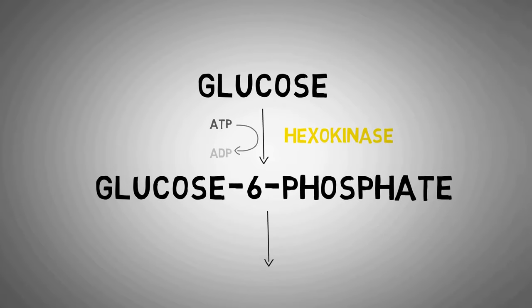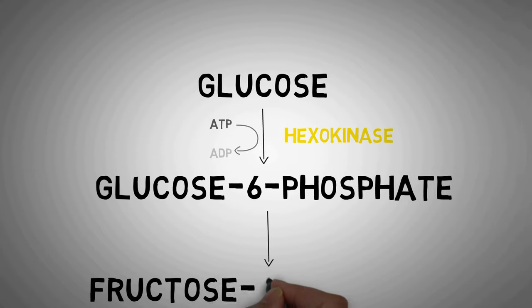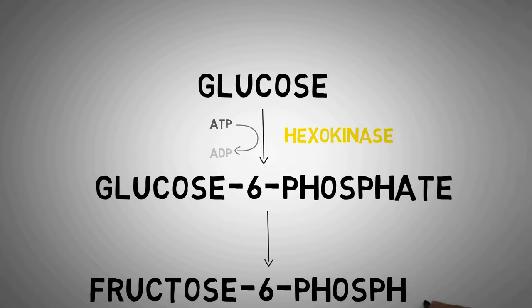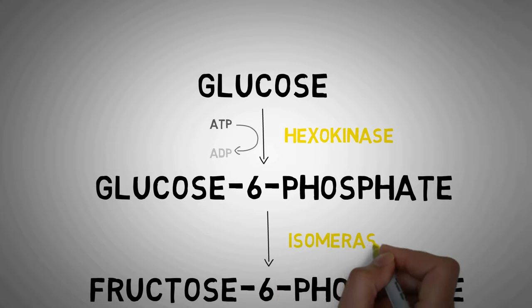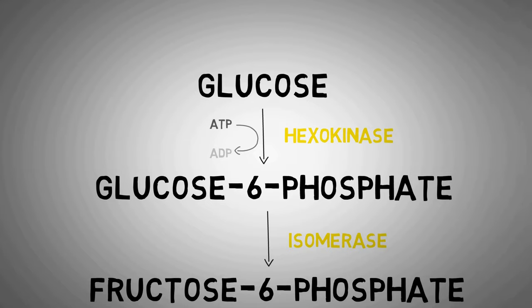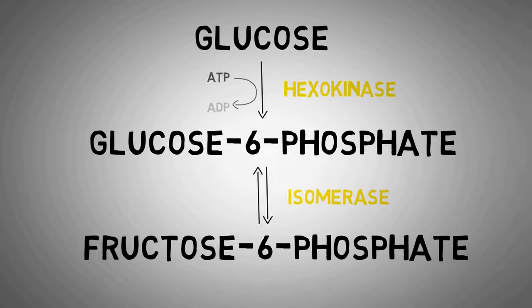The next step is also very simple: an enzyme isomerase converts glucose-6-phosphate into its isomer fructose-6-phosphate. This isomerase is also known as glucose phosphate isomerase, which catalyzes this isomerization reaction that could be reversed under normal cell conditions.